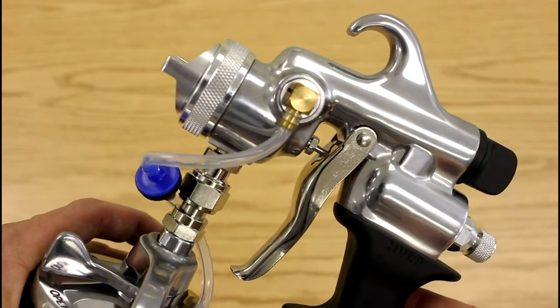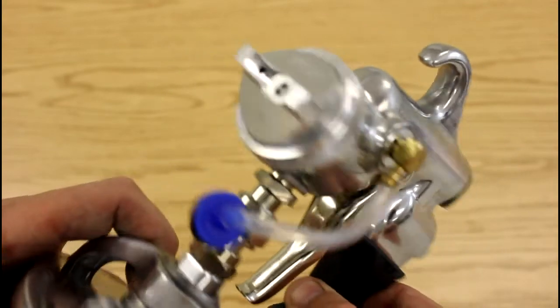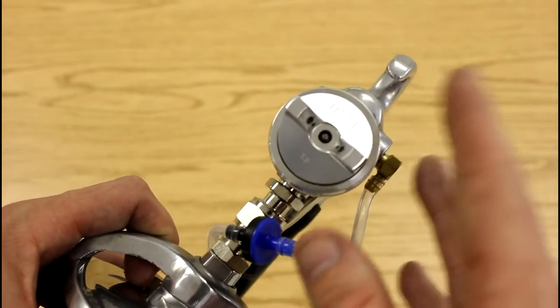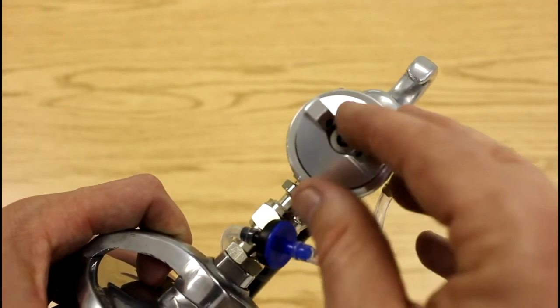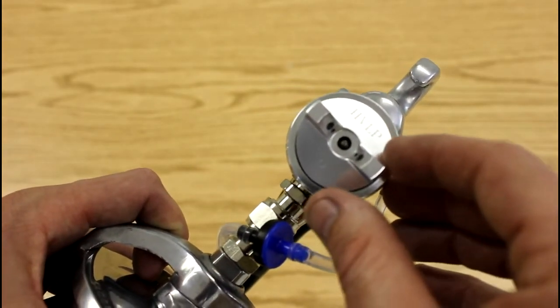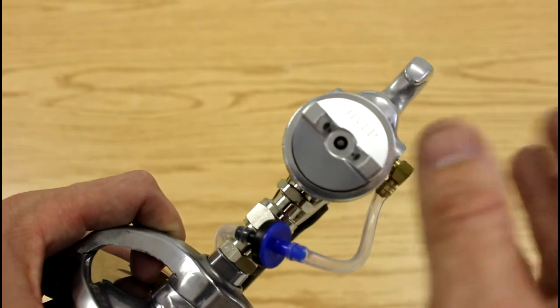Okay, so let's go over some of the basic functions of the spray gun itself. We'll start off here on the front. On the front of the gun we have the air cap and the air cap does a couple of things. One it atomizes the finish so it gives us our spray fan and two it sets the direction of our spray fan itself.